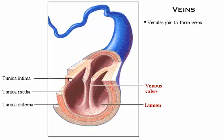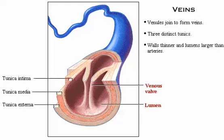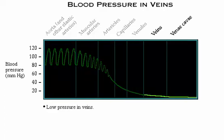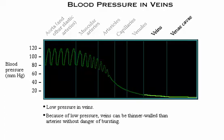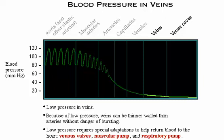Venules join to form veins. Veins usually have three distinct tunics, but their walls are always thinner and their lumens larger than those of corresponding arteries; the tunica externa is the thickest wall layer. In the graph of blood pressure, note the low pressure in the veins. Because blood pressure within veins is low, they can be much thinner-walled than arteries without danger of bursting. However, the low-pressure condition demands some special adaptations to help return blood to the heart: venous valves, the muscular pump, and the respiratory pump all assist in returning blood to the heart.